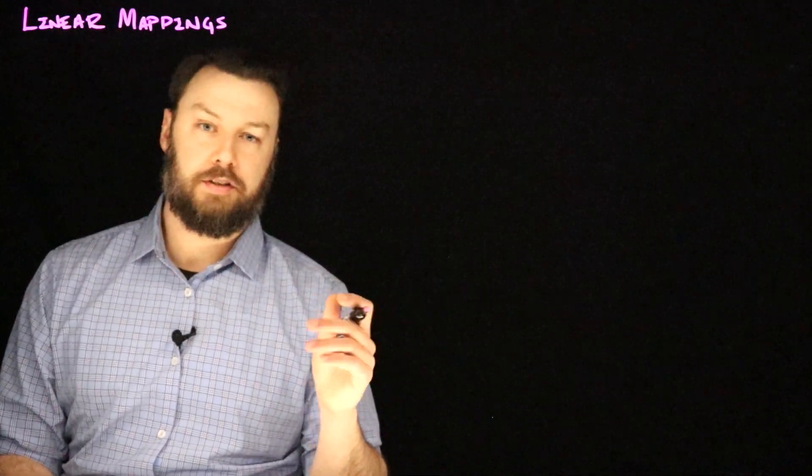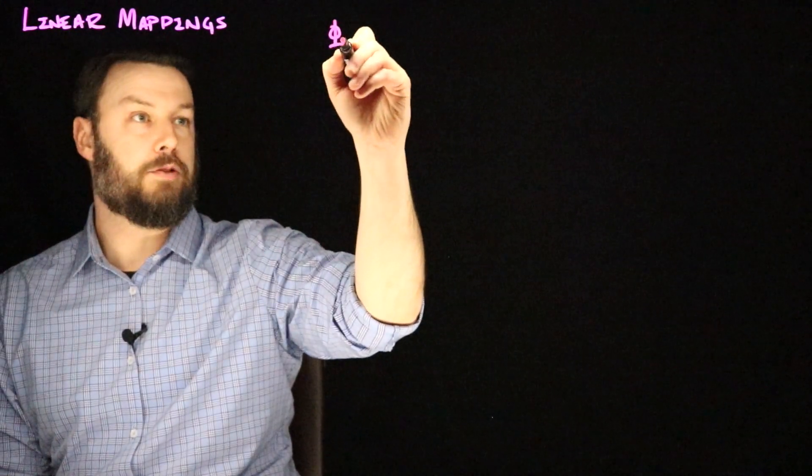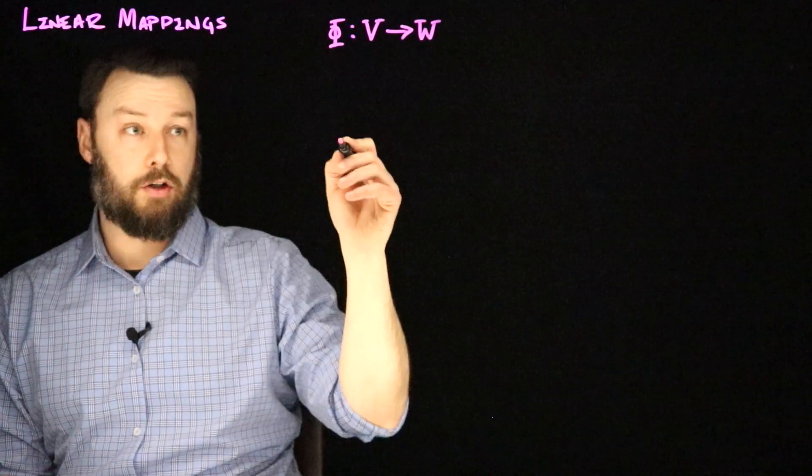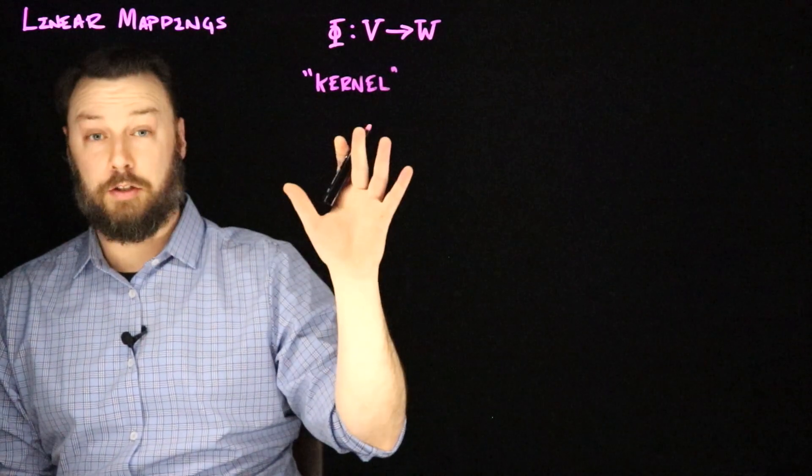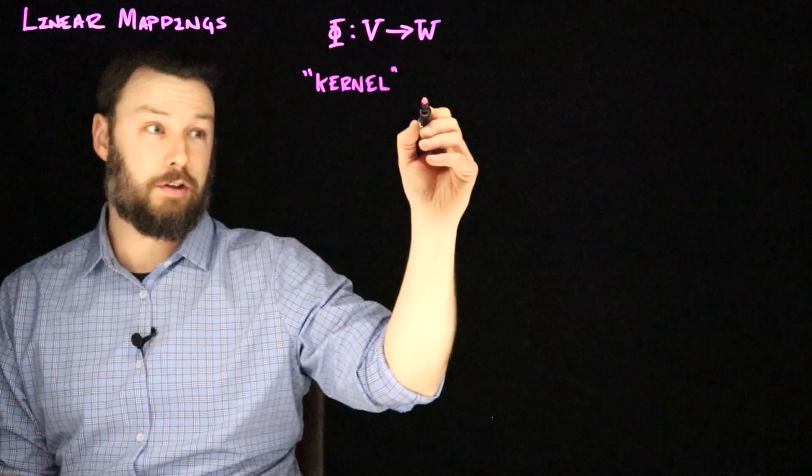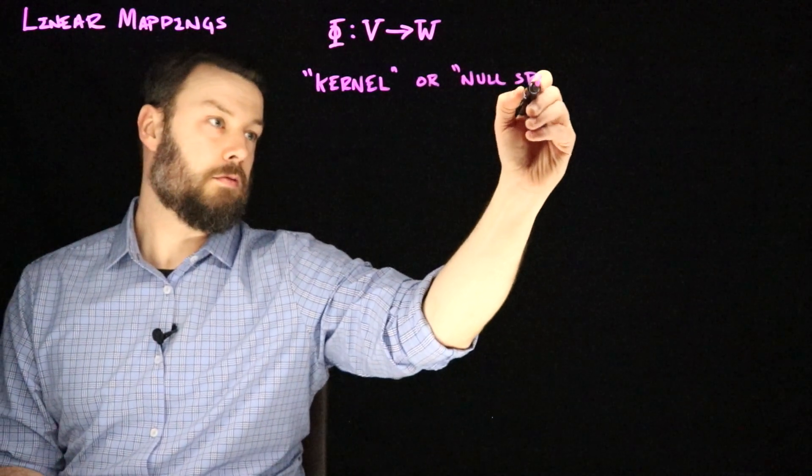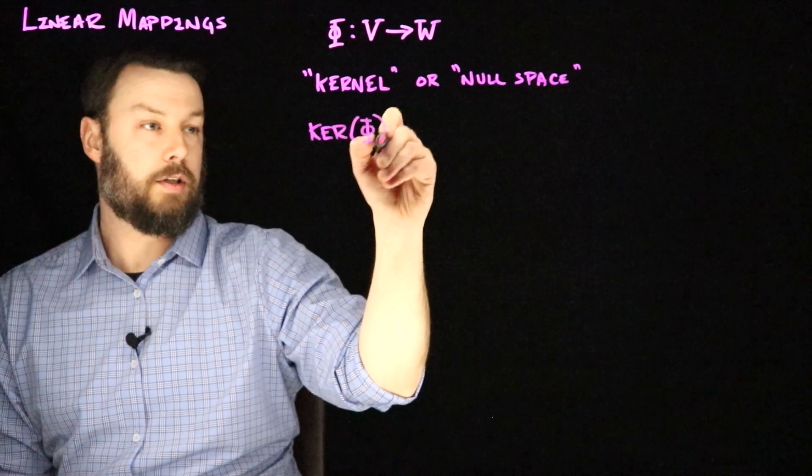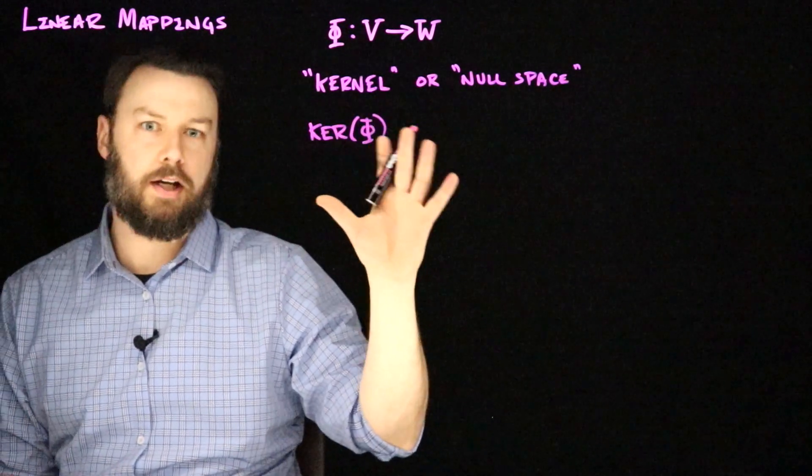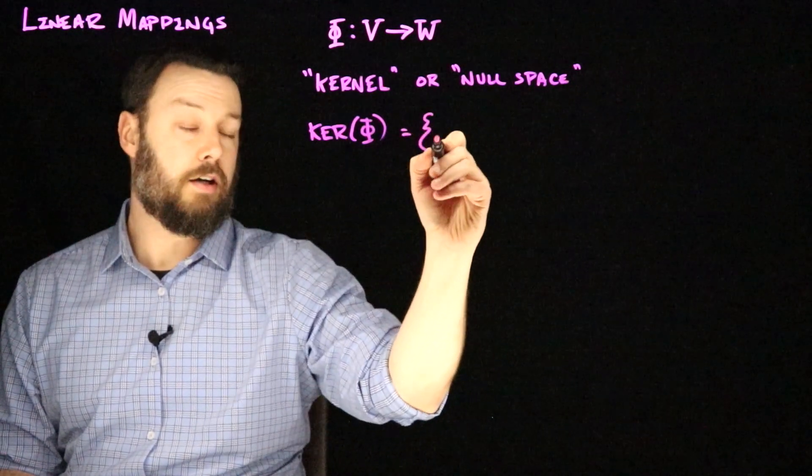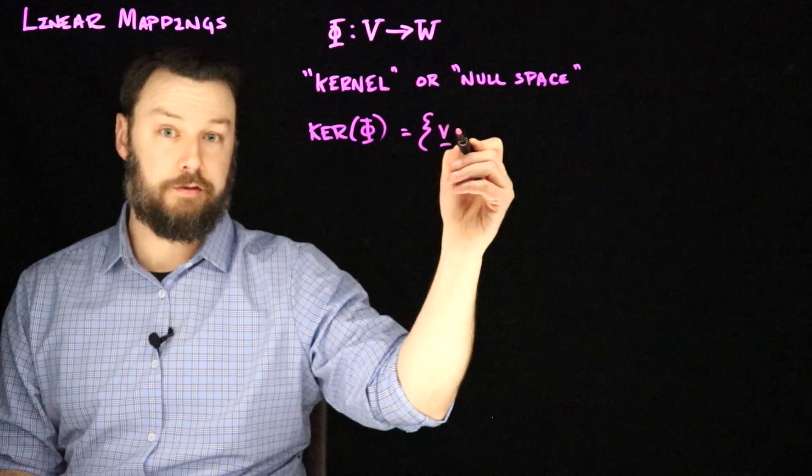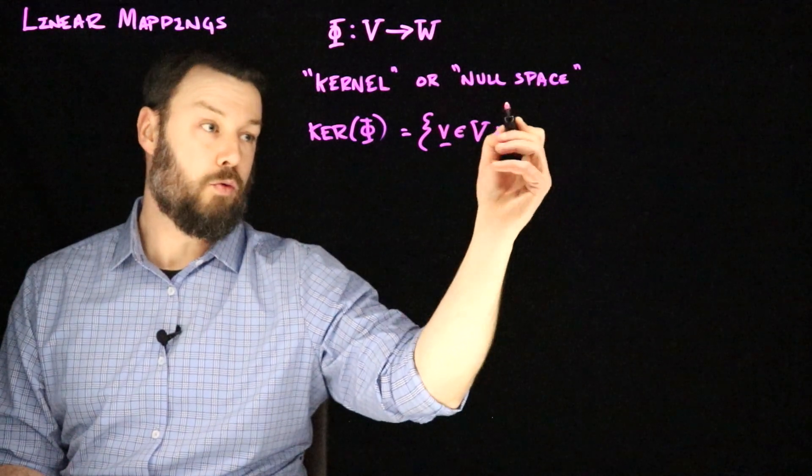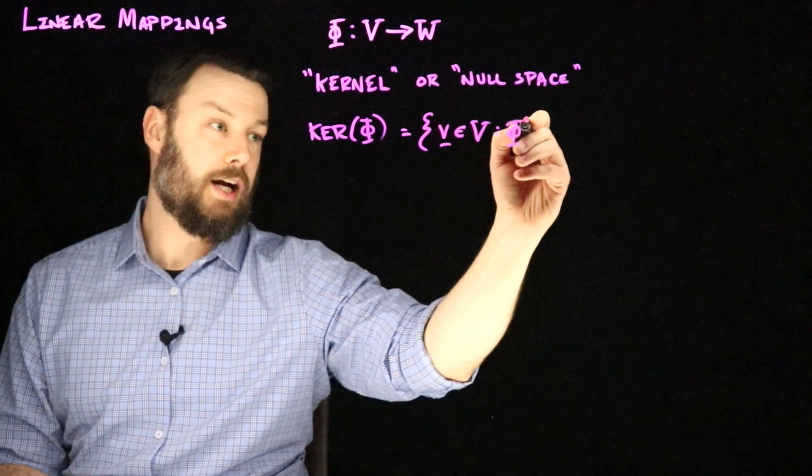So now let's talk about some important sets associated with a map Phi between V and W. So one important concept is the idea of a kernel. The word kernel in machine learning means something completely different from this, and so I actually prefer to call it a null space. But the kernel associated with a map Phi, which I'm going to write as kind of like a function that we apply to the map Phi, that is the set of vectors in V, so the V's inside the set V, such that when you hit them with Phi, they become zero.